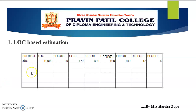In this table you can see that the project name is KBC. LOC, that is line of code, is 10,000. Effort is considered as 20. Cost is considered as $170. Then there are errors, documentation, defects in that particular project, and the number of persons required. LOC, that is line of code, is very easy to count.